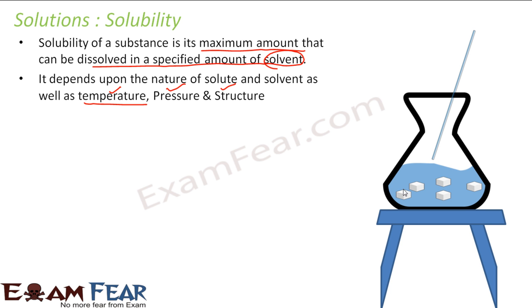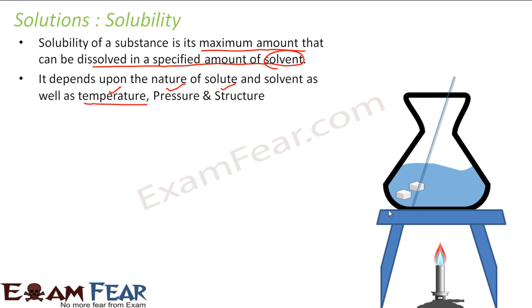Starting with temperature: if you take some water and add sugar crystals and stir it, you will see that some sugar dissolves but some remains. But if you heat the water and stir again, more sugar dissolves. That means heating plays an important role in solubility. The sugar crystals that weren't dissolving by stirring got dissolved when we heated the water. So temperature plays a role in this scenario.